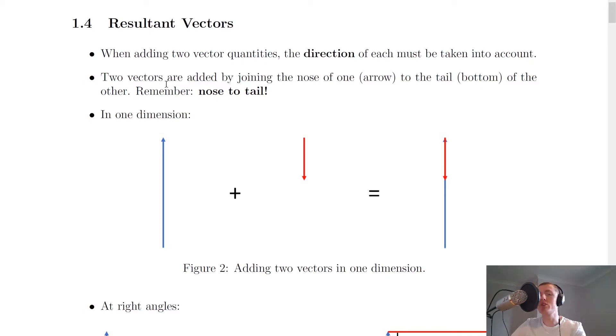And there's one important rule which you should remember from National 5, which is that two vectors are added by joining the nose of one to the tail of the other. So you need to remember to add vectors nose to tail.